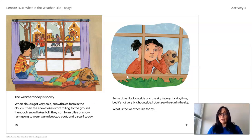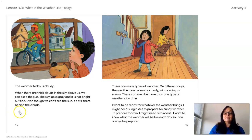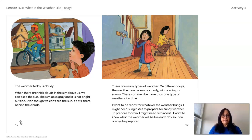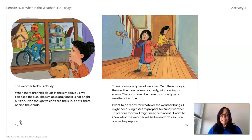Some days I look outside and the sky is gray. It's daytime, but it's not very bright outside. I don't see the sun in the sky. The weather today is cloudy. When there are thick clouds in the sky above us, we can't see the sun. The sky looks gray and it is not bright outside. Even though we can't see the sun, it's still there behind the clouds. There are many types of weather on different days — the weather can be sunny, cloudy, windy, raining, or snowy. There can even be more than one type of weather at a time.